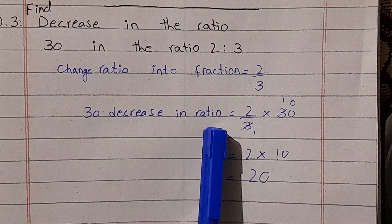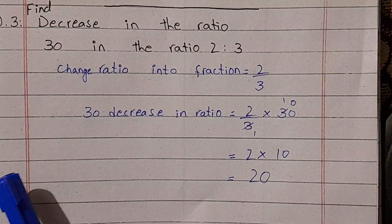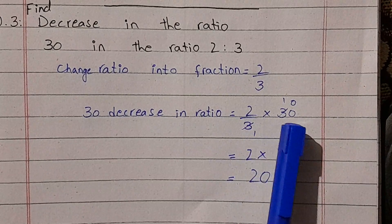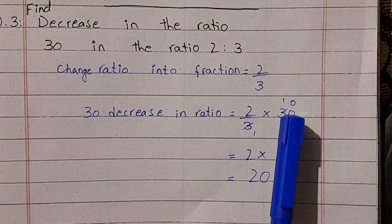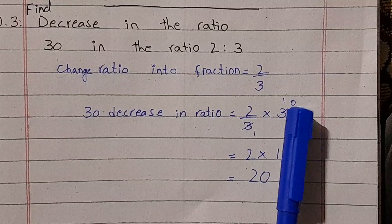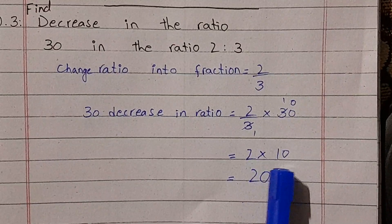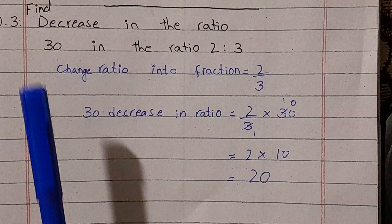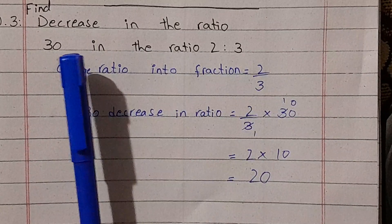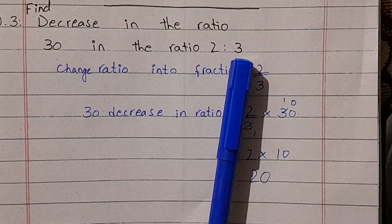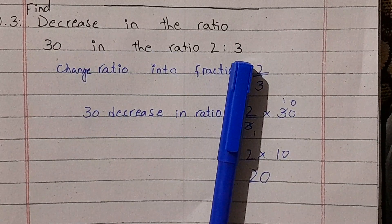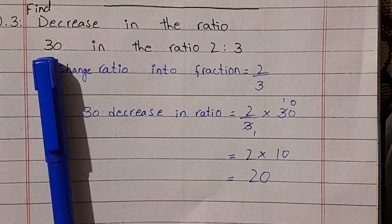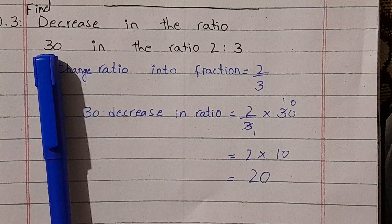For example, decrease 30 in the ratio. We write the ratio as a fraction: 2 over 3, then multiply by 30. We divide 30 by the denominator, which equals 10, and then multiply by the numerator.